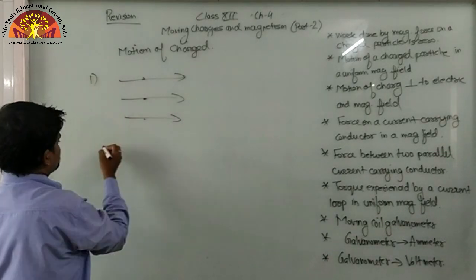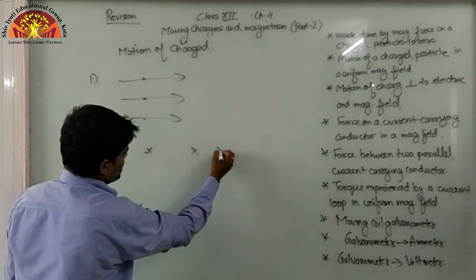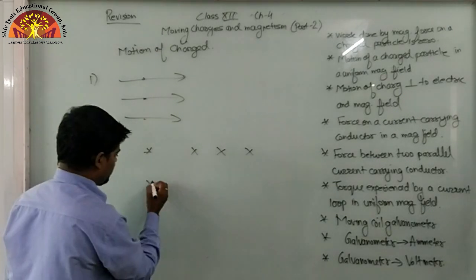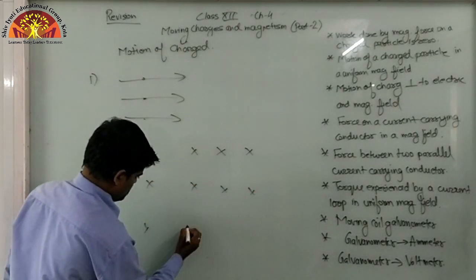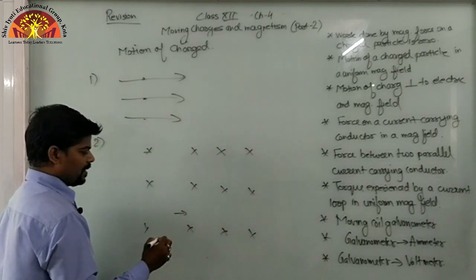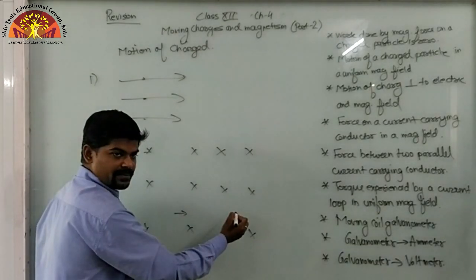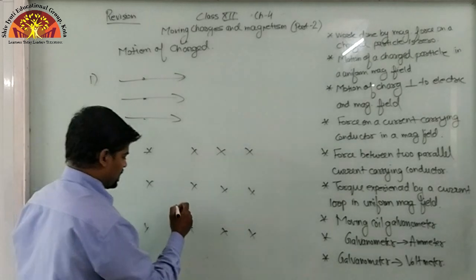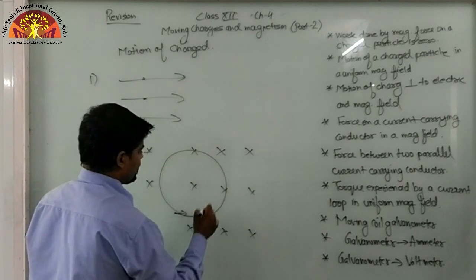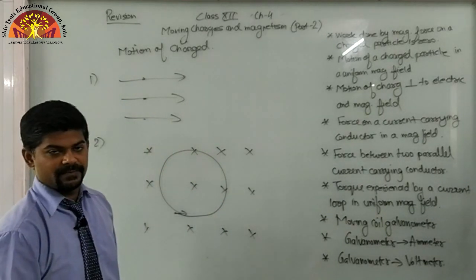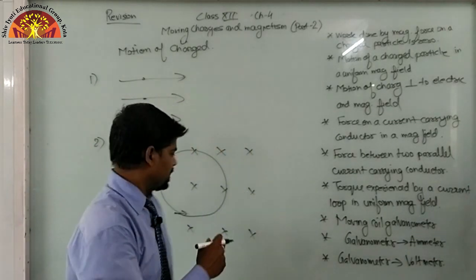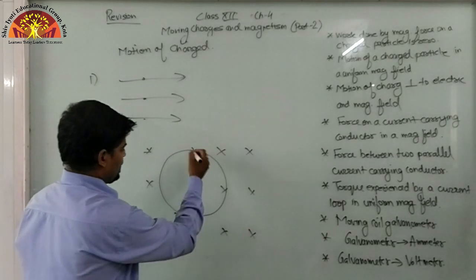This was the first case. But if we represent the magnetic field going into the page — denoted by crosses — and a charged particle is moving in a direction perpendicular to this field, then due to the magnetic force acting continuously on this particle, it will start to rotate. That means a charged particle moving perpendicular to the magnetic field will follow a circular path.